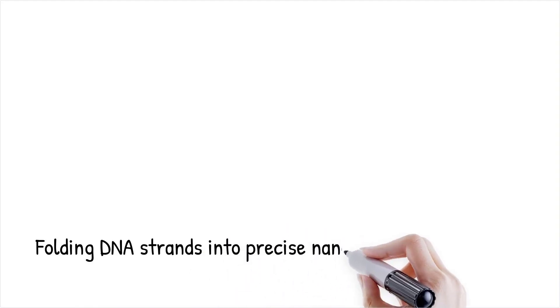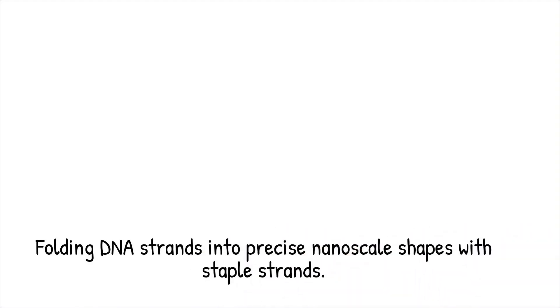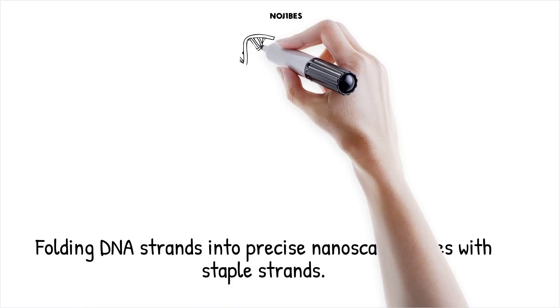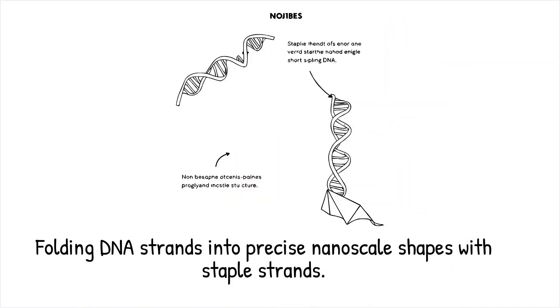DNA origami is a method of folding long DNA strands into specific nanoscale shapes using complementary short DNA staple strands that bind to precise locations on the long strand. This process relies on the Watson-Crick base pairing rules and is highly programmable, enabling the creation of diverse shapes and devices with nanometer precision.